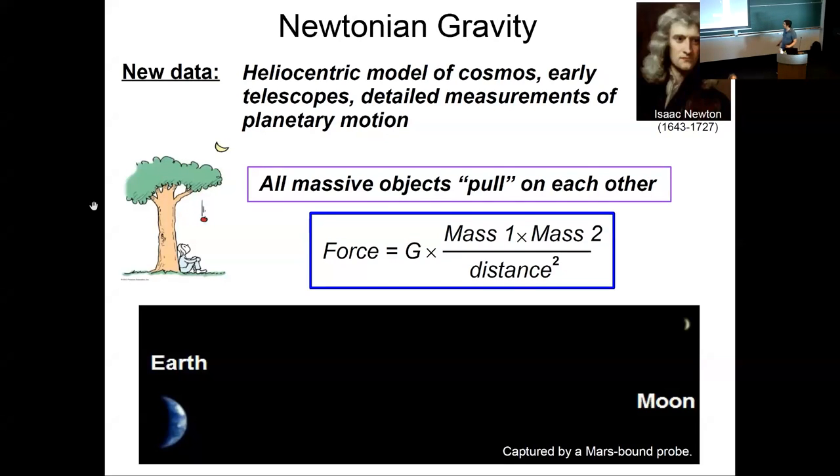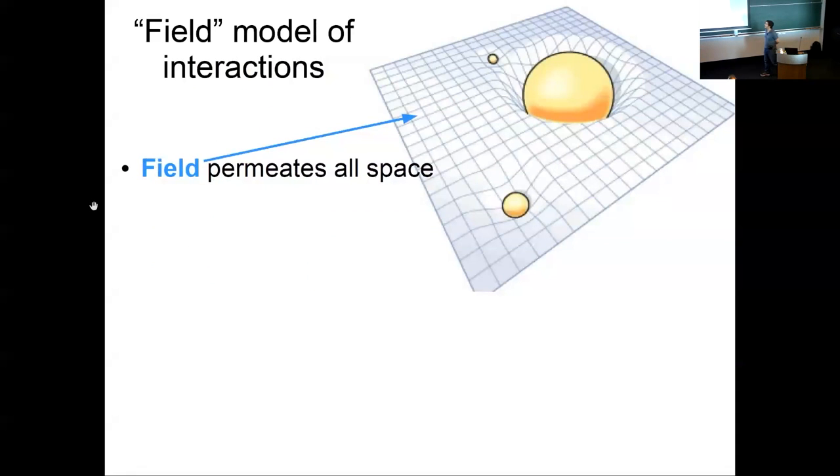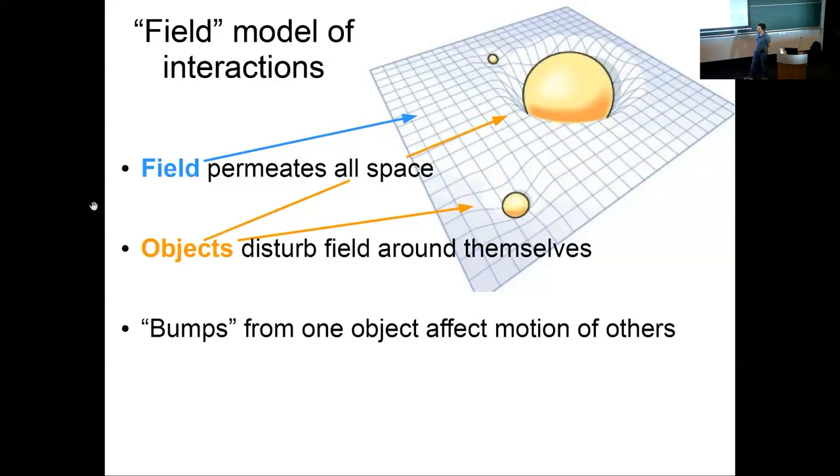So during the next couple of centuries, other long distance forces have been studied and modeled using what's called the field model of interaction. By other long distance forces, I mean electricity and magnetism. The idea of a field model of interactions is that the objects don't directly push on each other or pull on each other, but that their interaction is modulated by a field. For each interaction, there is a field that permeates all space. When there is an object that has the appropriate charge that interacts with that field, it bends the field around itself. The bumps in that field pull on other bits of the field. They can propagate out and affect the motion of other objects.